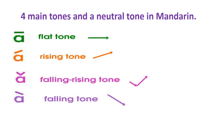And then the next one is neutral, meaning it has no tone. There is no tone mark on top of this letter A. Again, let's read all of them: flat tone — Ah; rising tone — Ah; falling-rising tone — Ah; falling tone — Ah; and no tone — Ah.